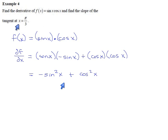They say they want the slope when x is pi by 3, which means when x is 60 degrees.